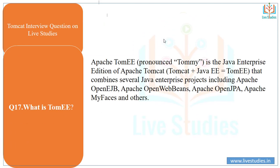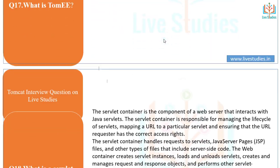Another question: what is TomEE? TomEE, pronounced 'Tommy', is the Java Enterprise Edition of Apache Tomcat — it is Tomcat plus Java EE. It combines several Java Enterprise projects including Apache OpenEJB, Apache OpenWebBeans, Apache OpenJPA, Apache MyFaces, and others.